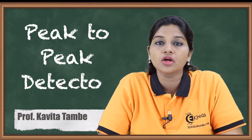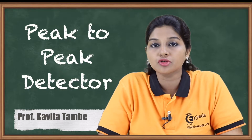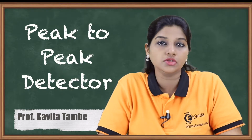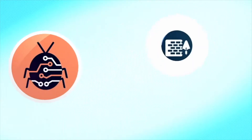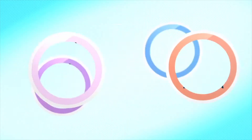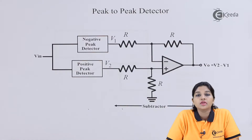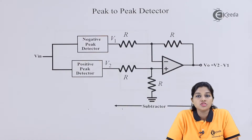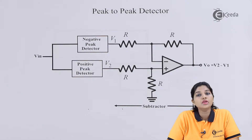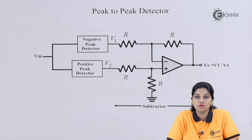Hello friends, in today's video we are going to see what do you mean by peak-to-peak detector and how the circuit of peak-to-peak detector works. Peak-to-peak detector or a peak detector is considered as one of the non-linear applications of op-amp. Peak-to-peak detector circuits are basically used to detect either positive or negative or both the peaks of an input signal.